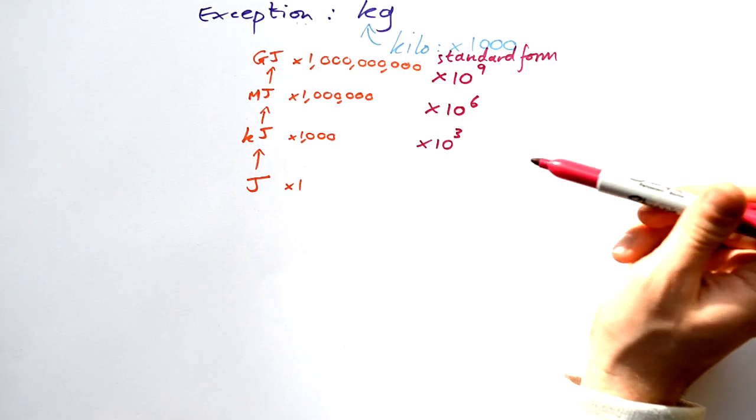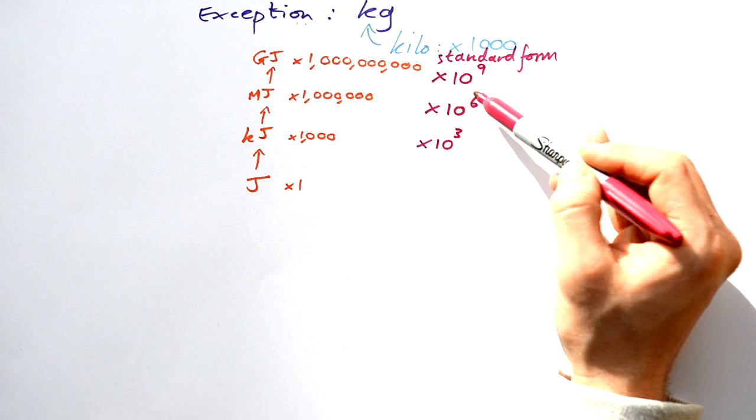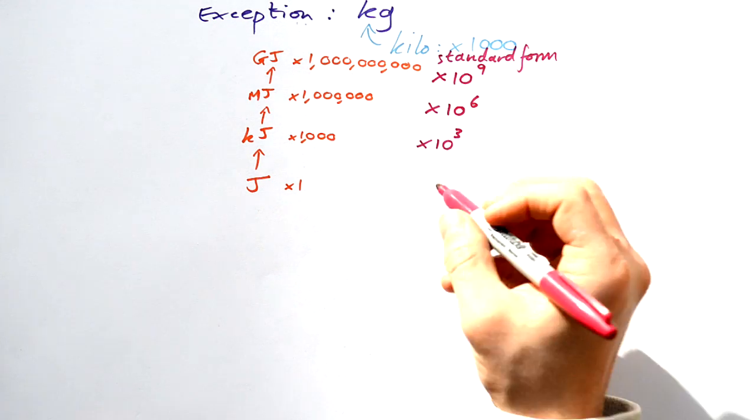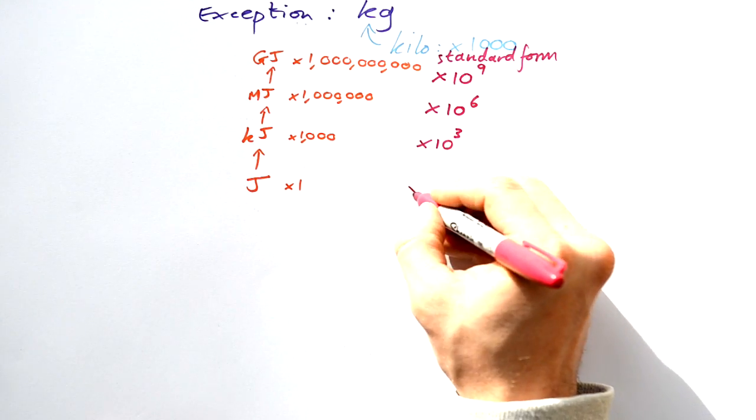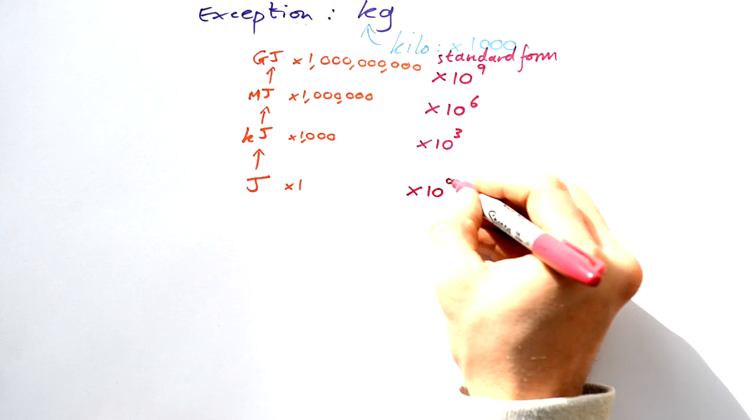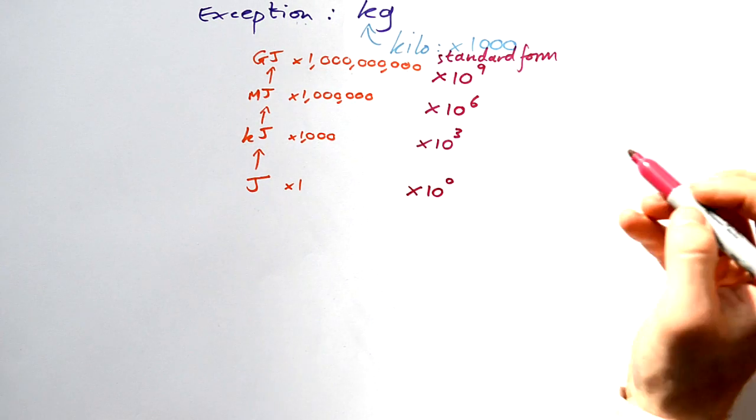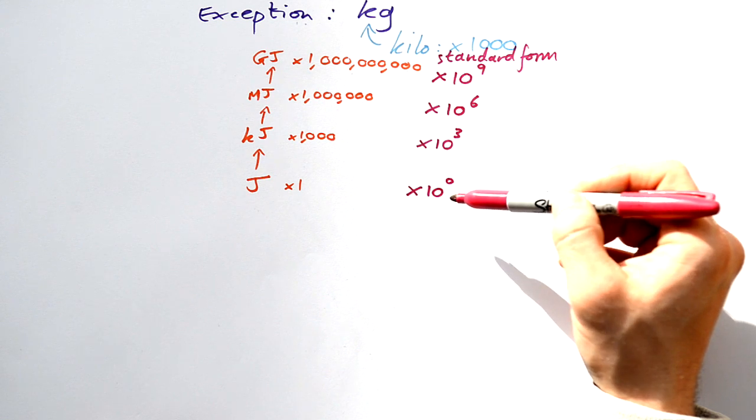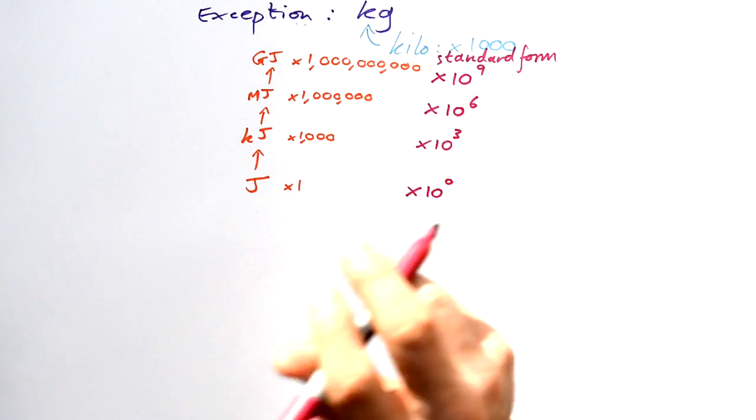Now you do have to remember these prefixes. Hang on a second though - 10 to the 9, 10 to the 6, 10 to the 3. What's just a joule then? Well, if you go down in threes, then technically this should be times 10 to the 0. Does that make sense? 10 to the 0 - well, that's actually 10 divided by 10, so that gives us one.